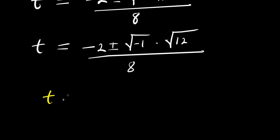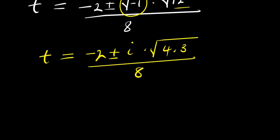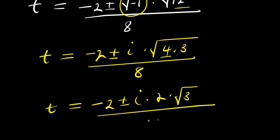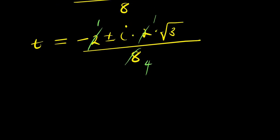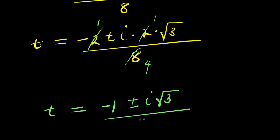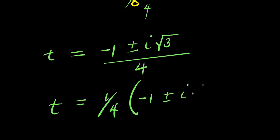From here, we have t equals negative 2 plus or minus the square root of negative 1 — which is i — times the square root of 12, that is 4 times 3, divided by 8. So t equals negative 2 plus or minus i times 2 root 3, divided by 8. Canceling the 2 with the 8 gives 4, so t equals negative 1 plus or minus i root 3, divided by 4, or equivalently t equals 1 over 4 times negative 1 plus or minus i root 3.